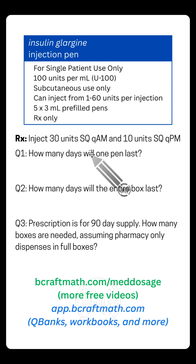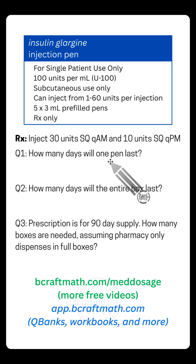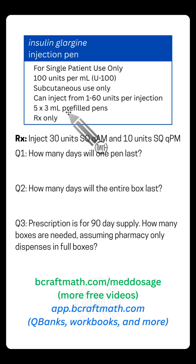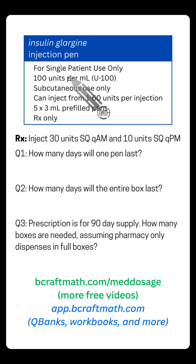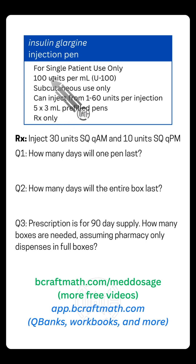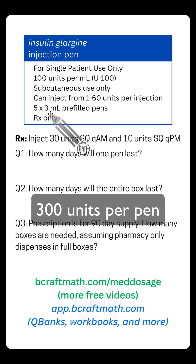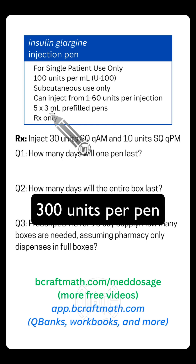First question: how many days will one pen last? What do we know about one pen? In this box there are five pens, and each pen is three milliliters. The concentration of insulin is 100 units per one milliliter, but each pen is three milliliters. Since there are 100 units per milliliter and each pen is three milliliters, that means there are 300 units per pen.